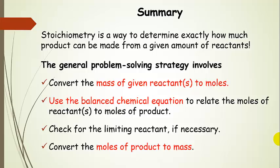Let's summarize. Stoichiometry is a way to determine exactly how much product we can make from a given amount of reactants — and it works in reverse too. Our general problem-solving strategy always starts with converting mass to moles, then using the balanced chemical equation to relate moles of reactant to moles of product. We always have to check for the limiting reactant when necessary — if something is stated to be in excess, skip that step; otherwise, if masses are given for two or more reactants, check for the limiting reactant. Finally, convert the lowest possible moles of product to mass, since that's what's actually produced in the real world.